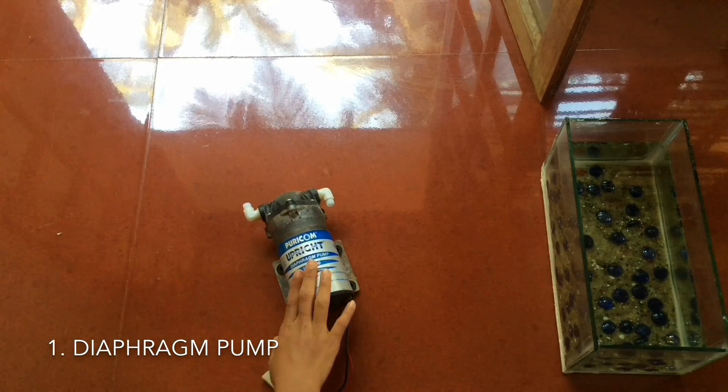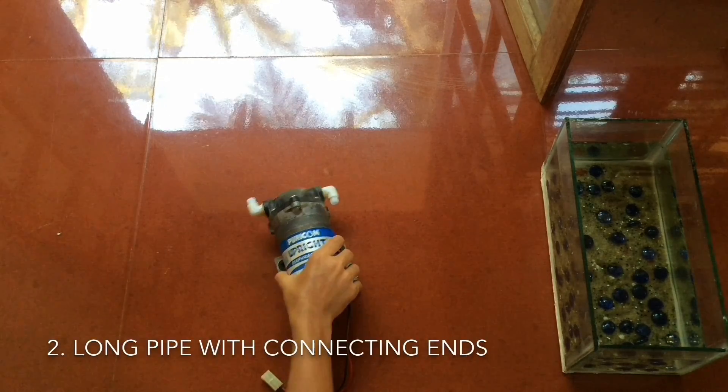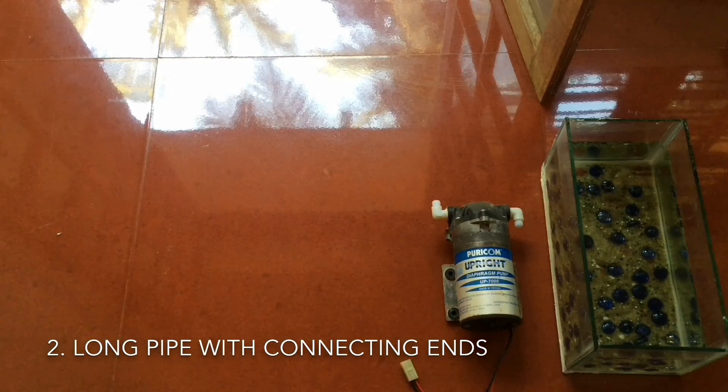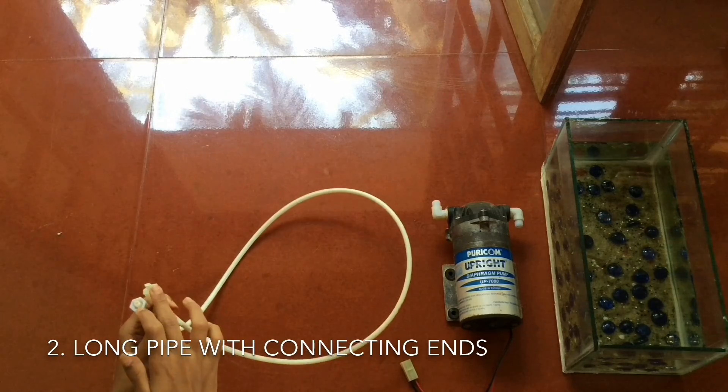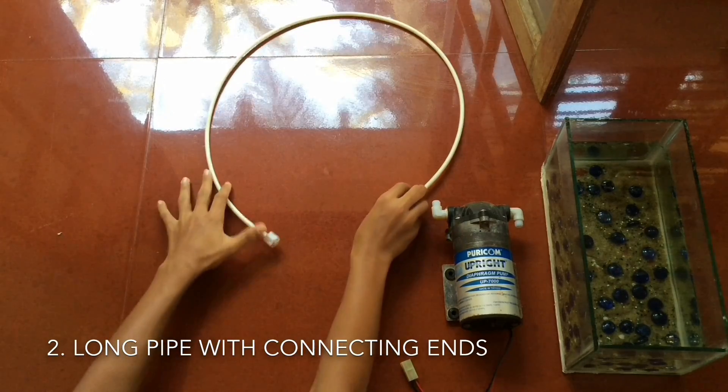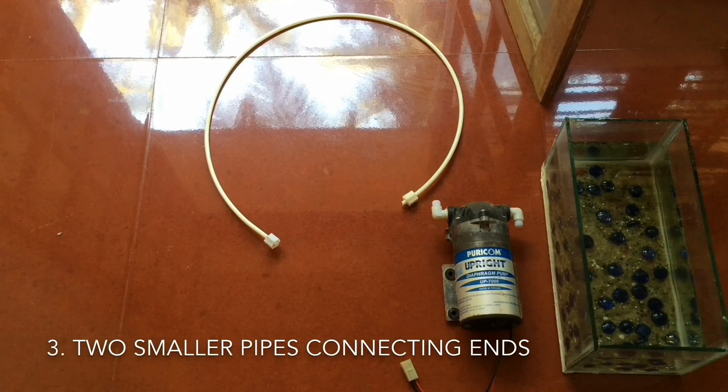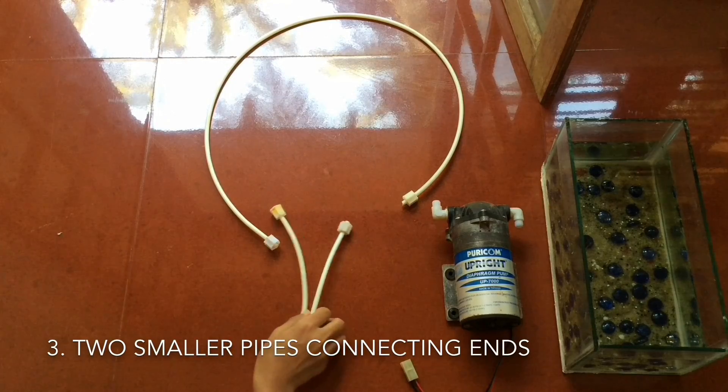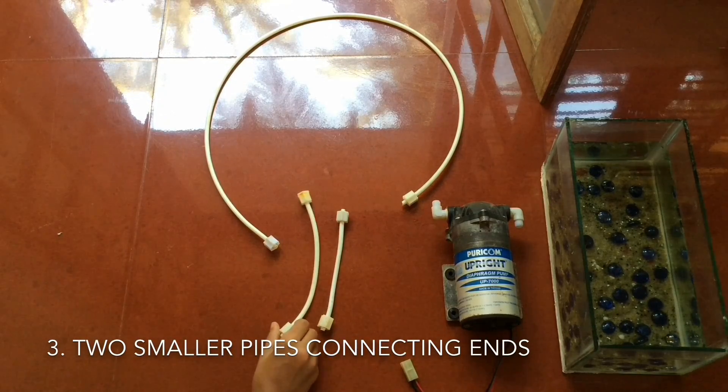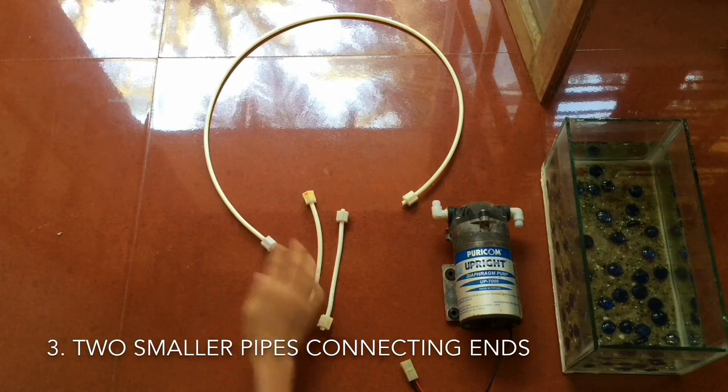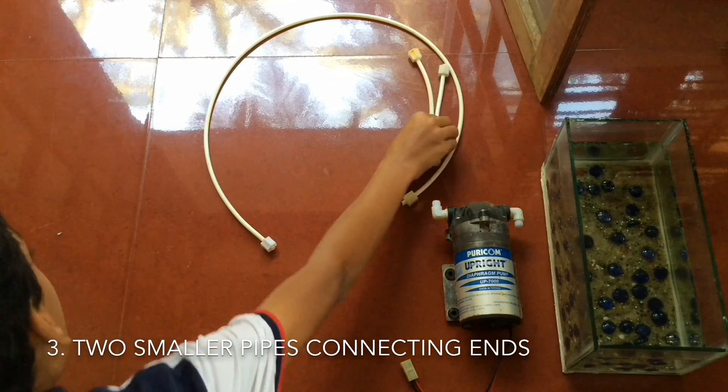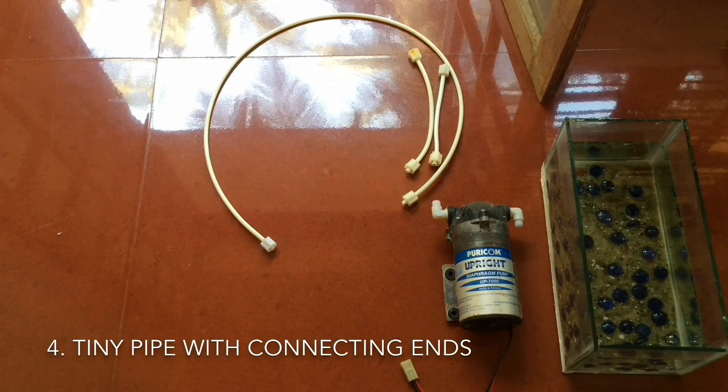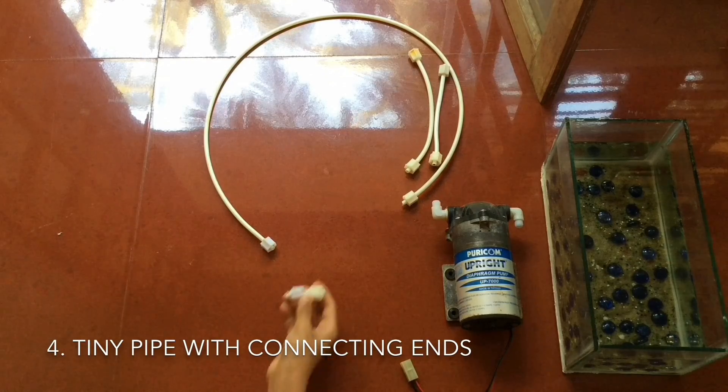I got this pump from an old water filter. Now you will need a long pipe with the same similar ends. You will need these pieces, the same diameter of this but a bit shorter with the same similar ends. Now you'll need a tinier one of that, again with the similar ends.